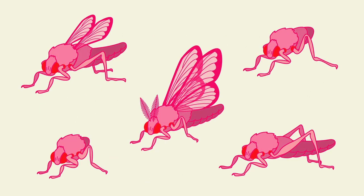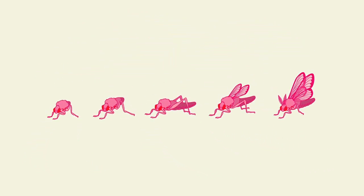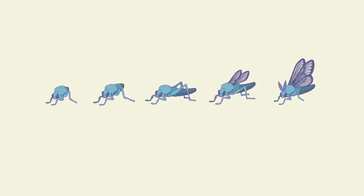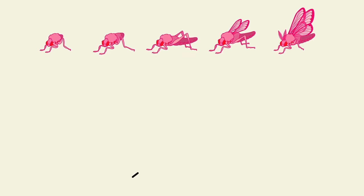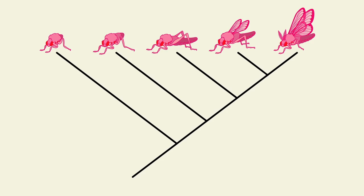To show the general idea of how tree diagrams work, let's organize this group of imaginary creatures. One way to organize them is to arrange them in a line from simple to complex, and then connect them with lines or branches. The lower branches connect to the simpler creatures, and the higher branches to the more complex ones.